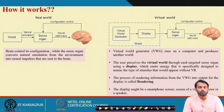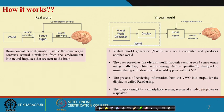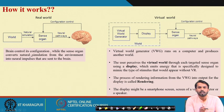How does it work? This is a comparison between the real world and the virtual world. In the real world, natural stimulation is propagated to the sense organs of the user, goes directly to the brain, and the brain acts accordingly. The brain controls its configuration while the sense organs convert natural stimulation from the environment into neural impulses sent to the human brain.